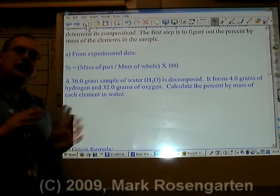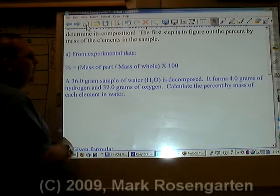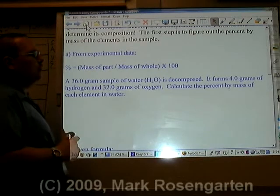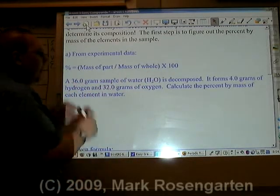When you're dealing with a compound, it's often useful to know what the percent composition of elements in the compound is. For example, if we take a compound and decompose it to make 4 grams of hydrogen and 32 grams of oxygen, and we want to find out what the percent by mass of the elements of the compound are.